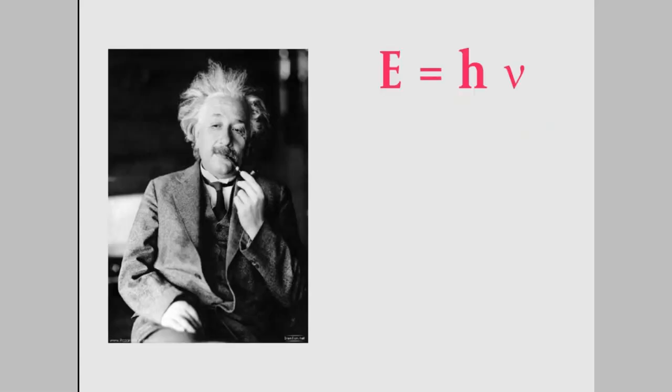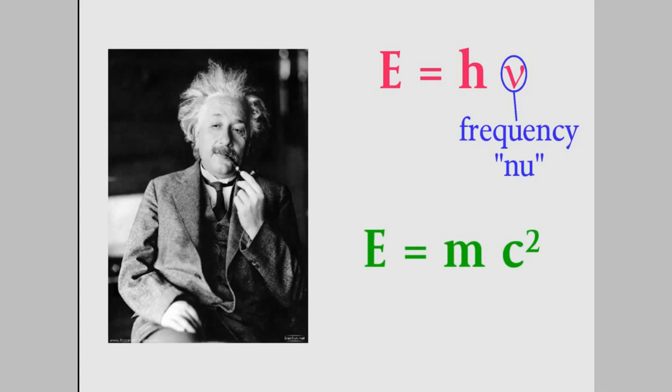Here's the first one. As I mentioned in an earlier video, Einstein said that the energy of a photon of light is equal to h times nu, where the Greek letter nu is the frequency of the light. The second of Einstein's ideas that Louis de Broglie used was his most famous equation, E equals mc squared. That's energy equals mass times the speed of light squared, where c is the speed of light.